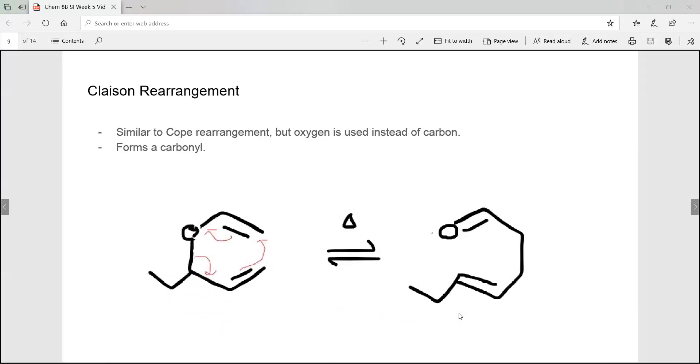Claisen rearrangement is very similar, except we use oxygen instead. So here we form a carbonyl in the product while making this alkene more substituted. Thank you guys for watching and see you guys next time.